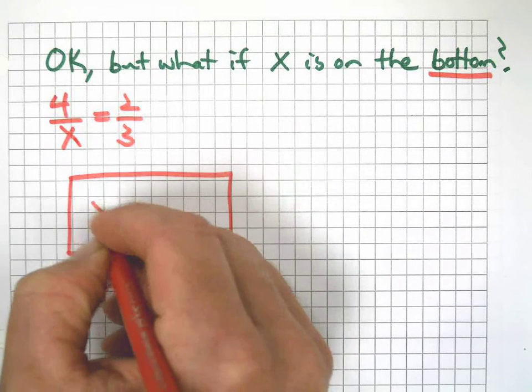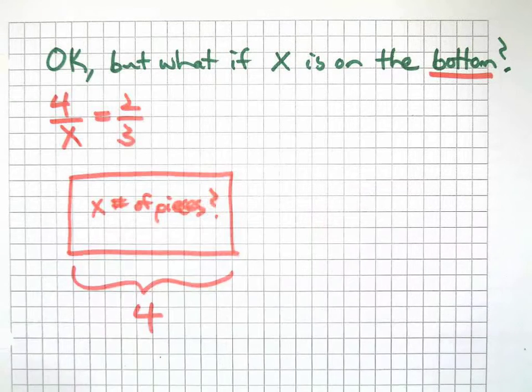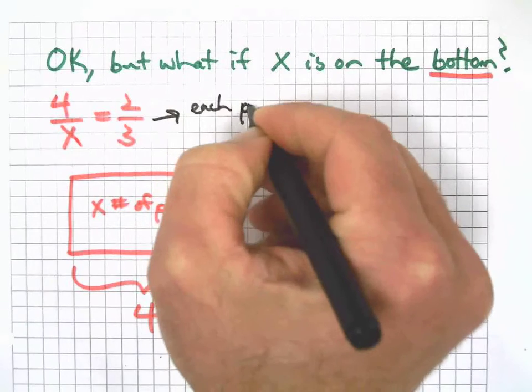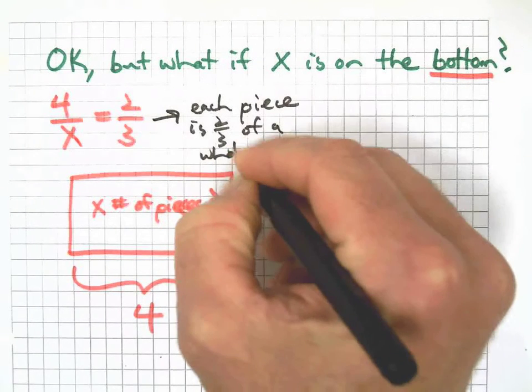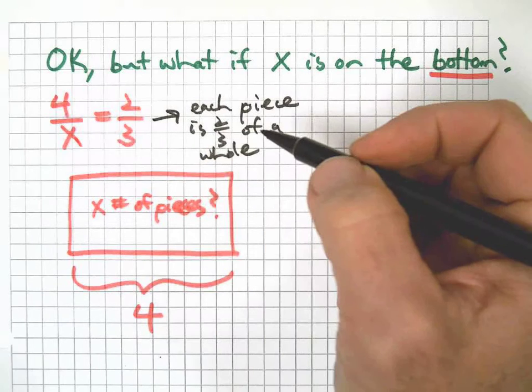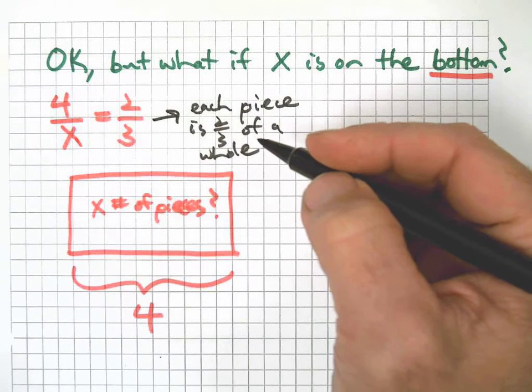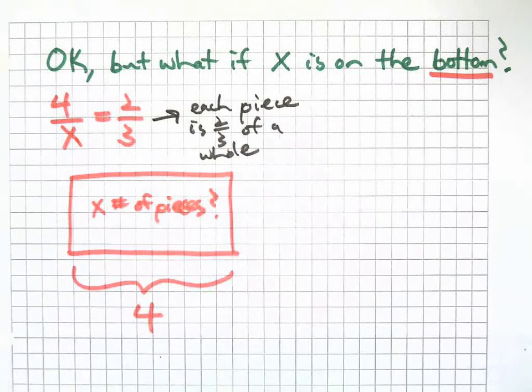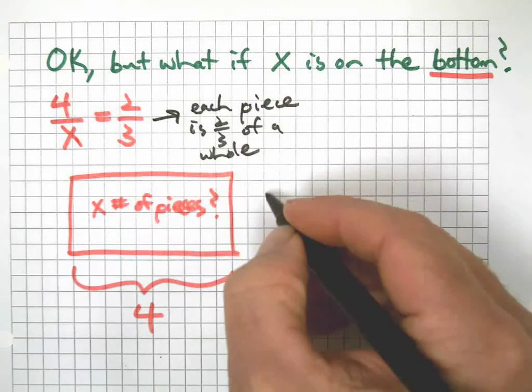This thing we're going to call it four, because we have four split into we don't know how many pieces. X number of pieces means we don't know how many pieces. Four is split into some unknown number of pieces, but we do know that each piece is worth two-thirds. So if we could just figure out how many two-thirds fit into four, that would tell us how many equal pieces there are in four such that each piece is worth two-thirds.